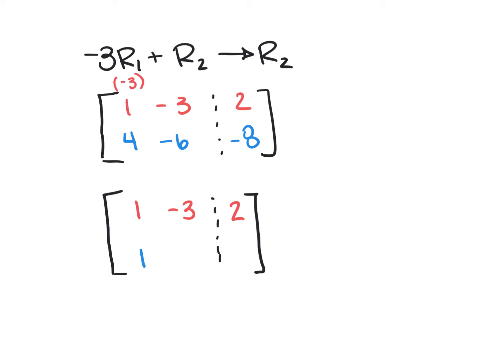Negative 3 times the negative 3 is a positive 9. I'm going to add it again. Remember, add to row 2, add to this row 2. So that's 9 plus a negative 6, or 9 minus 6, which is just 3.